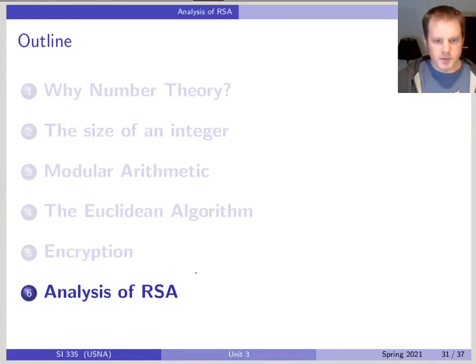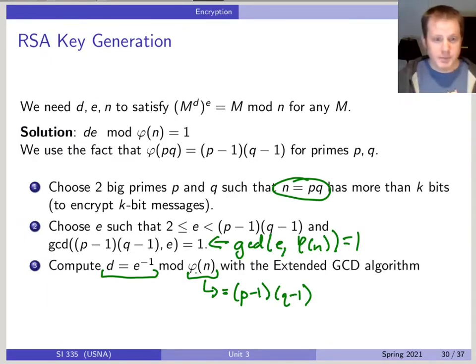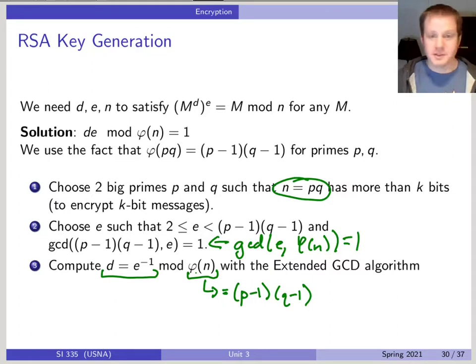Now we've seen how RSA works. It's really just modular exponentiation with the public key to encrypt, then modular exponentiation with the private key to decrypt.